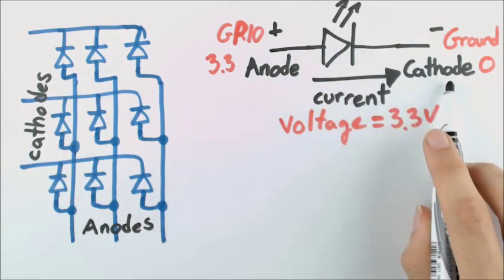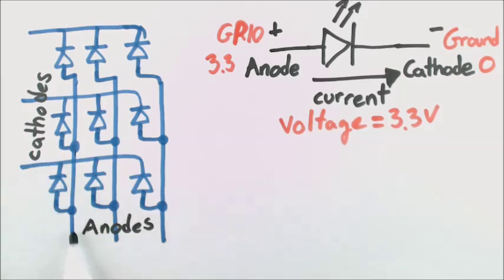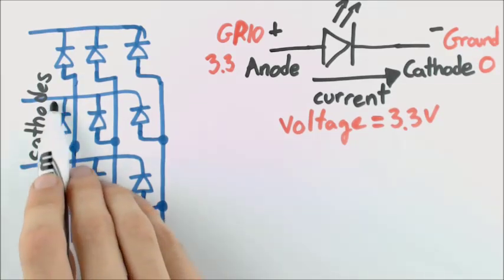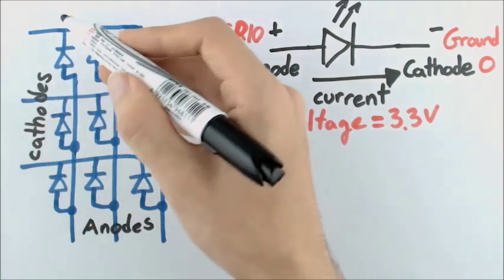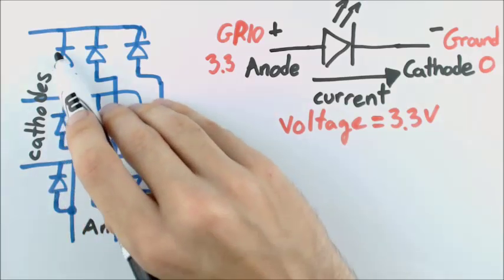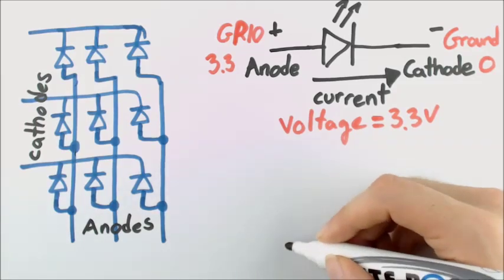So we've got what looks like a good setup, but we start running into some problems pretty quickly. Now, before, we connected cathodes to ground. So let's try doing that here. If all of these are connected to ground, then if I put 3.3 volts here, we'll have a voltage of 3.3 volts across this LED. But also, I would have it across this LED and as well this LED. So all three of my LEDs would turn on at the same time. That's not what I want. I want to be able to control one of these.